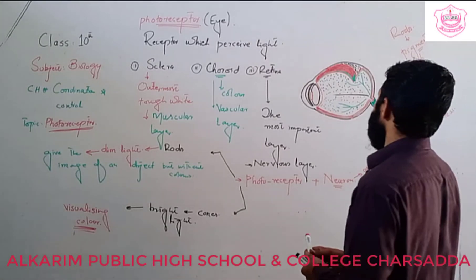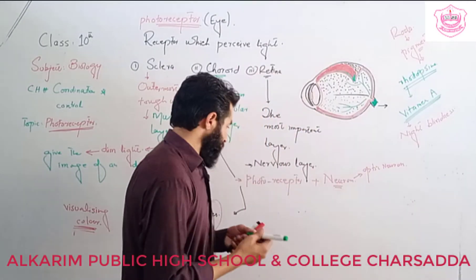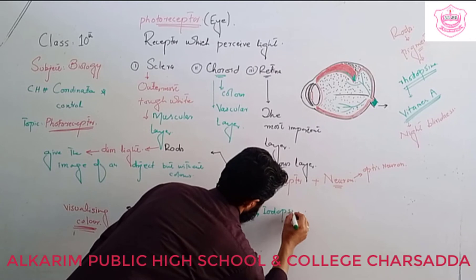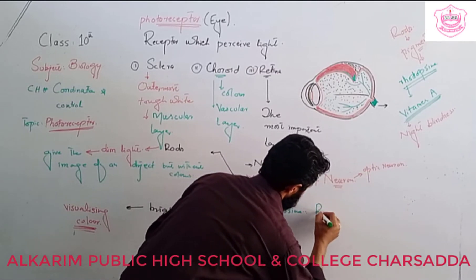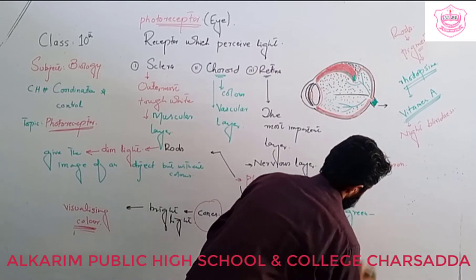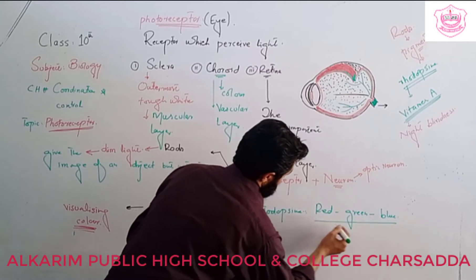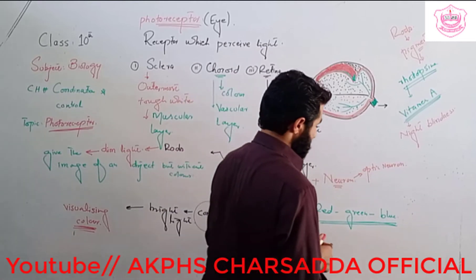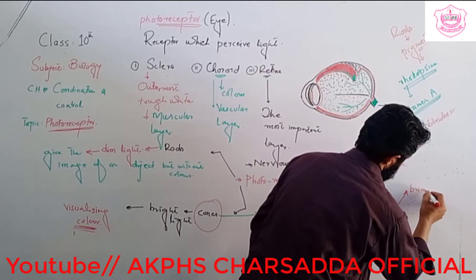Cones also contain a pigment that is known as iodopsin. There are three types of cones: one type is responsible for red color, another for green color, and the third one is responsible for blue color. When all cones are equally stimulated, the combination produces bright white light.